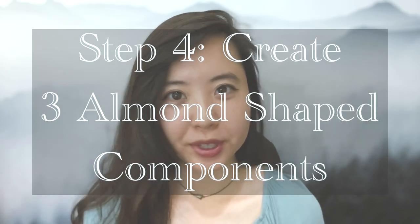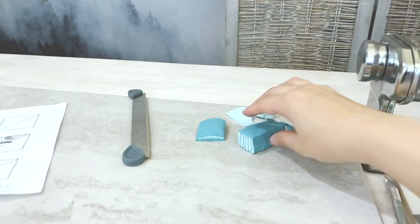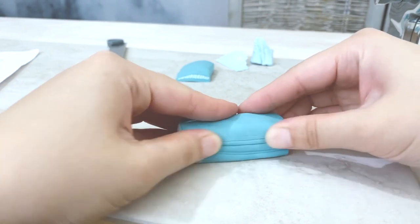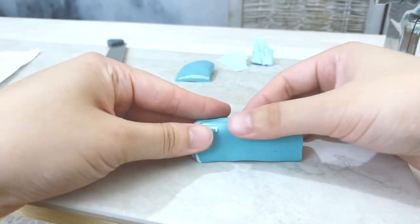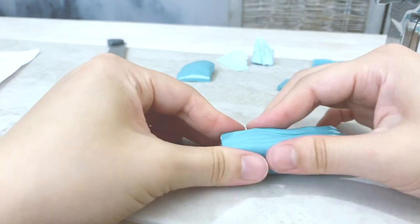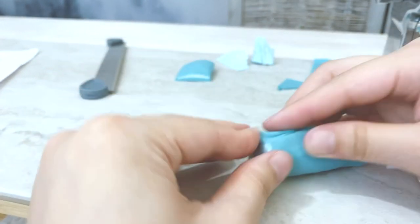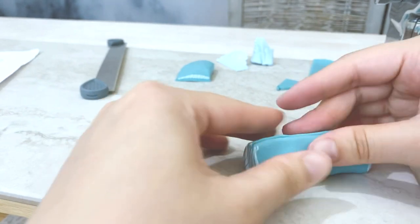Step 4: Create 3 almond shape components. Next I'm taking the other stripe cane and I'm going to meld the pieces together by sort of rubbing the sides to round out the shape. But also to allow the lines to converge into north and south poles. Hopefully that description makes sense.